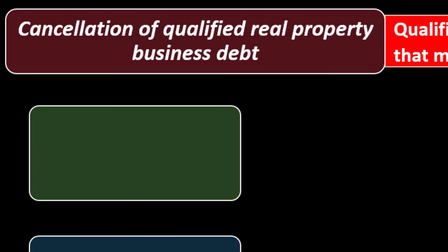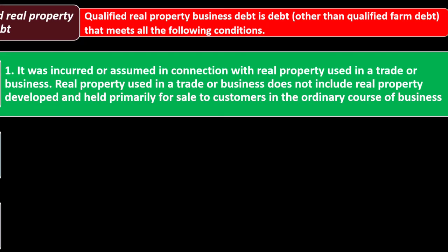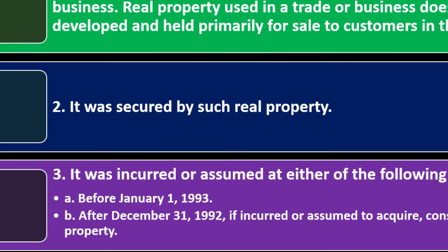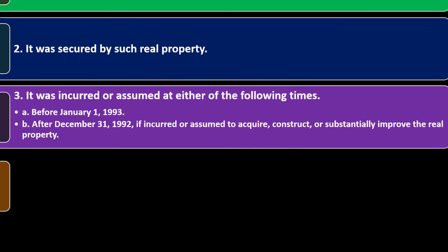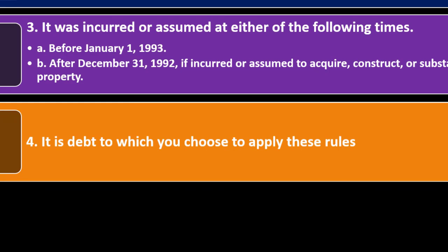Reducing basis is not ideal because when you sell the property, if you sell it for higher than the basis, the difference is the gain you'll have to recognize. Qualified real property business debt is debt — other than qualified farm debt — that meets all of the following conditions: (1) it was incurred or assumed in connection with real property used in a trade or business, not including real property developed and held primarily for sale to customers; (2) it was secured by such real property; (3) it was incurred or assumed before January 1, 1993, or after December 31, 1992 if incurred to acquire, construct, or substantially improve the real property; (4) it is debt to which you choose to apply these rules.